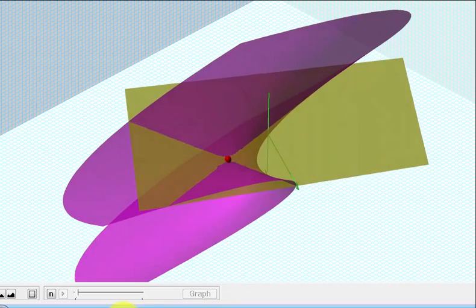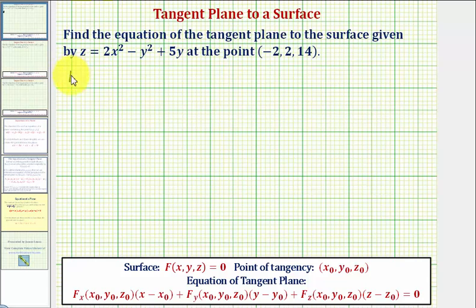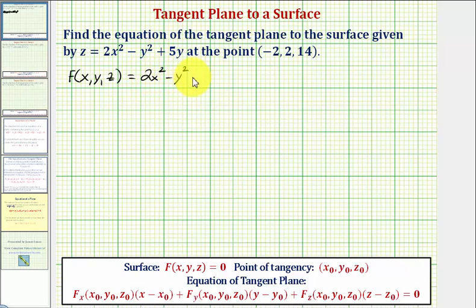Going back to our notes, our first step is to write the surface in this form, where we want a function of x, y, and z equal to zero. Notice how if we subtract z on both sides, we will have a function of x, y, and z set equal to zero. So we can say that F(x, y, z) equals two x squared minus y squared plus five y minus z equals zero.